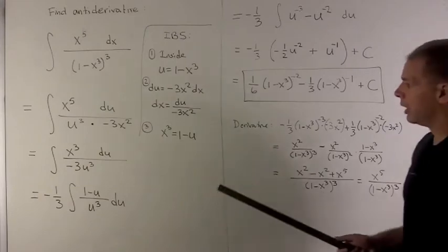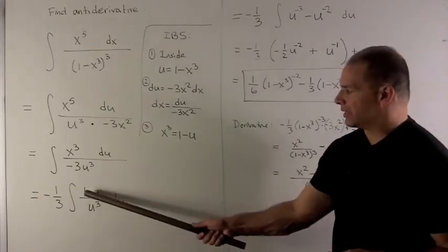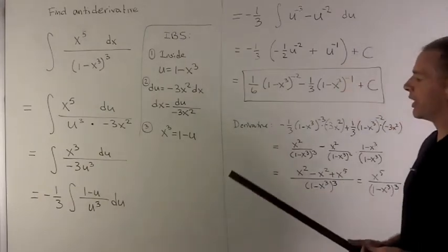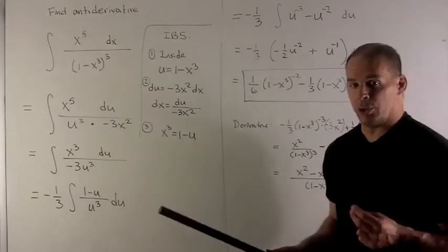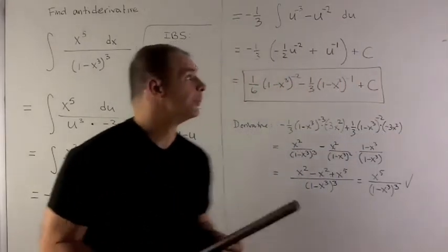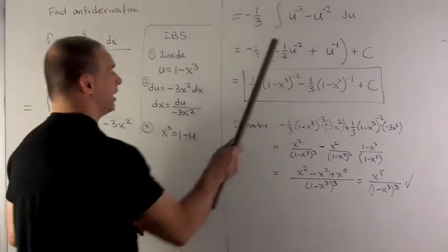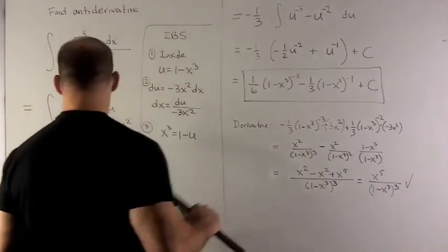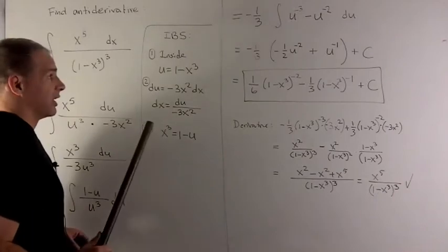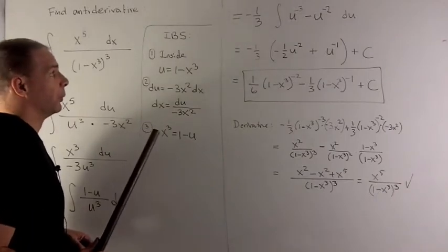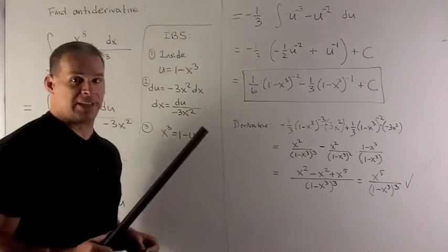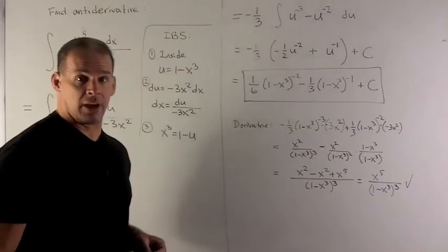Now I'm going to divide u cubed into each of these. So that's really the same as multiplying by u to the minus 3. So I'm going to have u to the minus 3 times 1 and u to the minus 3 times u to the 1, which gives me u to the minus 2. We have this and this is something we definitely know how to take the antiderivative of.